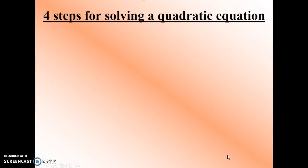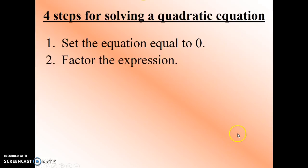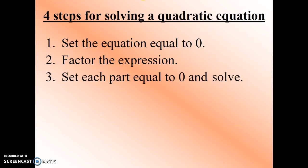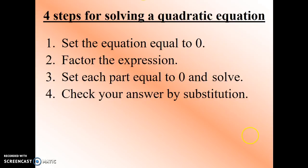There are four steps to solving a quadratic equation. Step 1, set the equation equal to 0. Step 2, factor the expression. Step 3, set each part equal to 0 and solve. This is where the zero product property comes into play. And step 4, check your answer.